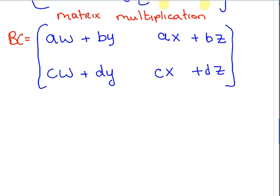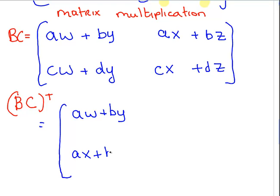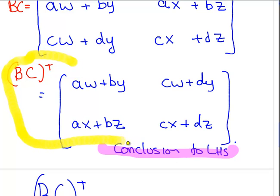Now what I'm going to do is get the transpose of BC. And again, it's the top row as a column. So AW plus BY and AX plus BZ. And then the second row is CW plus DY, CX plus DZ. So that is the conclusion to the left-hand side. And it's this matrix here. So I'm going to come back to this shortly.